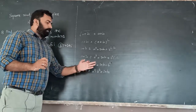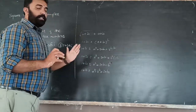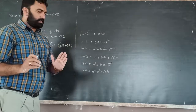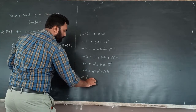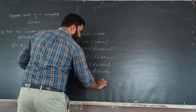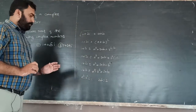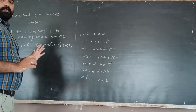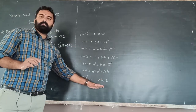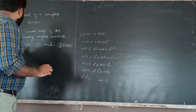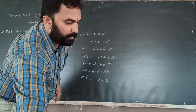Now equating both sides — comparing real part to real part — we get 2ab is equal to 2. You can solve the rest at home. Now let us see the example and we will totally understand.